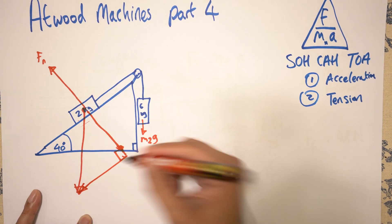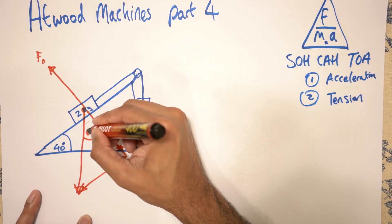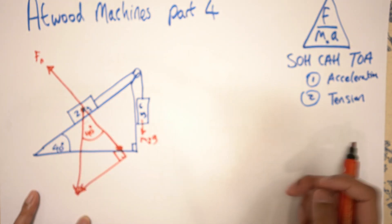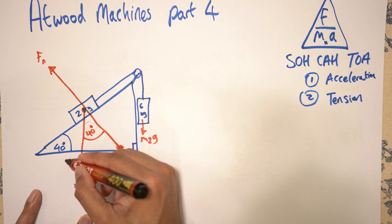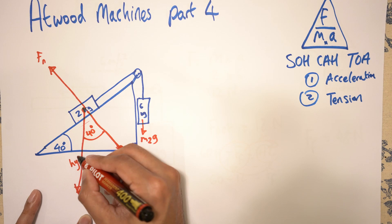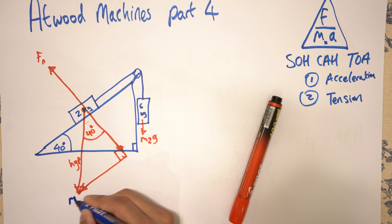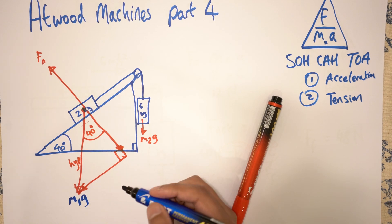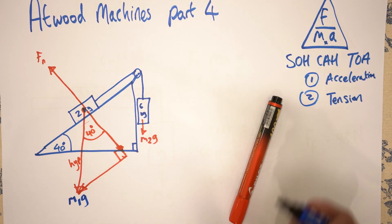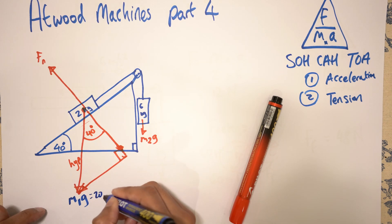Now this is a right angle. This is 40 degrees. It's the same angle as this, right? This is your hypotenuse. And remember this is M1G. M1G being the mass times gravity. So that's going to be 20 Newtons.